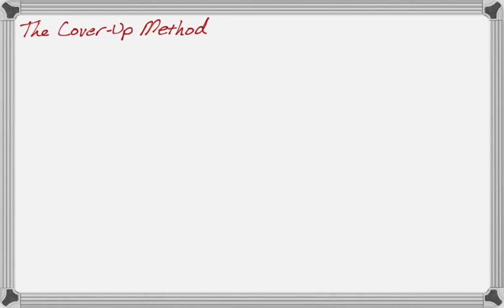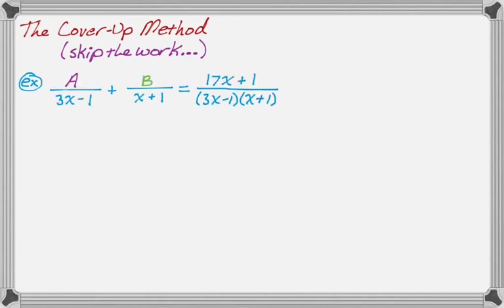The cover-up method basically just skips the work. Here's an example: A over (3x minus 1) plus B over (x plus 1) equals 17x plus 1 over (3x minus 1)(x plus 1). When using the cover-up method, the denominator absolutely needs to be in factored form. To solve for A, I focus on 3x minus 1 — mentally I'm multiplying everything by 3x minus 1 and letting x equal 1/3, which makes 3x minus 1 equal to zero.